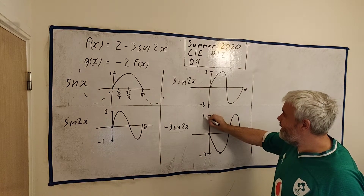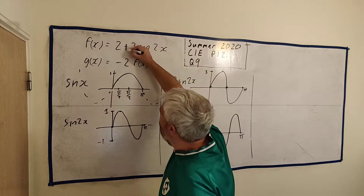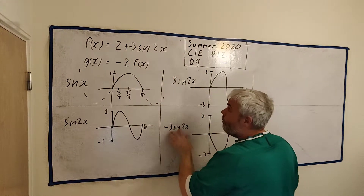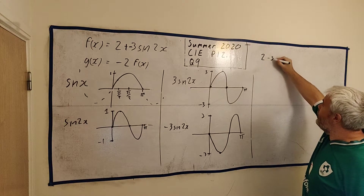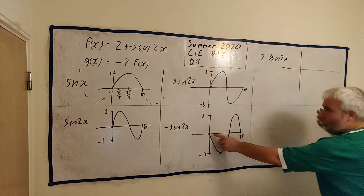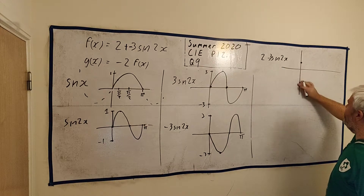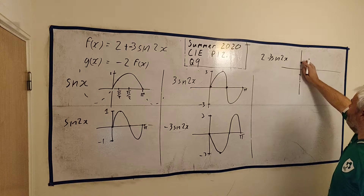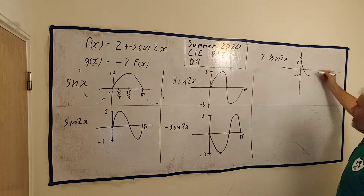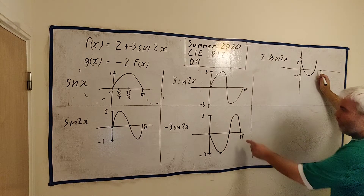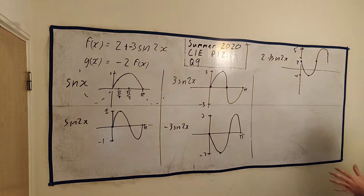They didn't ask for minus 3sin(2x) — they asked for 2 minus 3sin(2x). So let's add 2 onto everything. At zero: 2 plus 0 gives 2. At the trough: 2 plus minus 3 gives minus 1. At the peak (flipped): 2 plus 3 gives 5. So the final picture goes between minus 1 and 5, with the graph starting at 2 at x=0, going down to minus 1, back up to 5, and returning to 2 at x=pi.